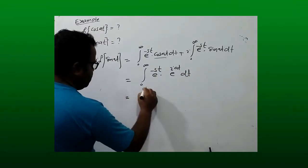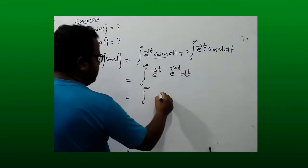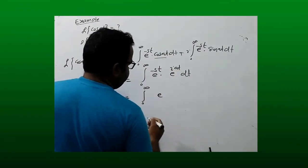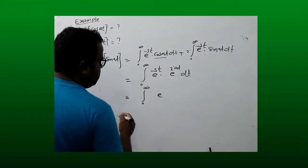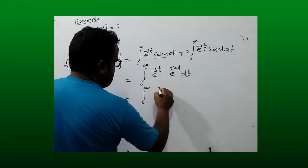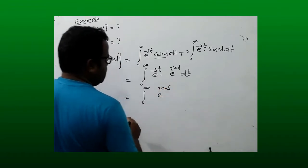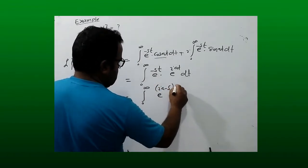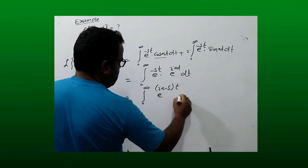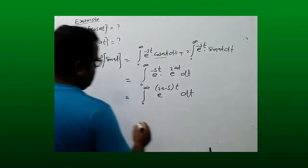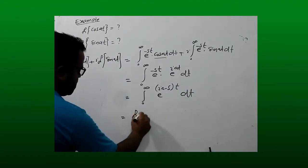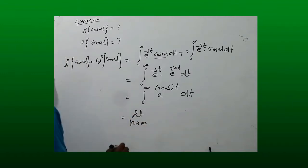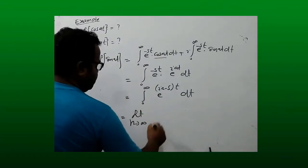From 0 to infinity, we see that e^((ia - s)t) is common, so the integral becomes the integral from 0 to infinity of e^((ia - s)t) dt.